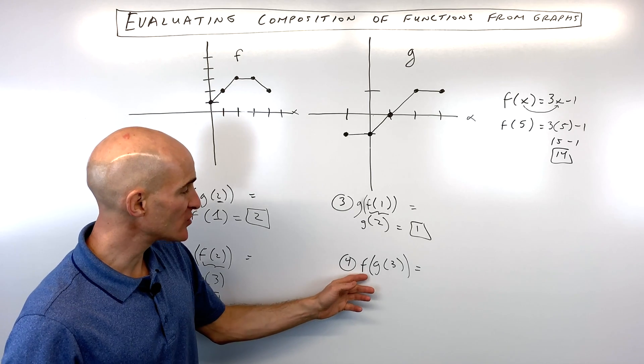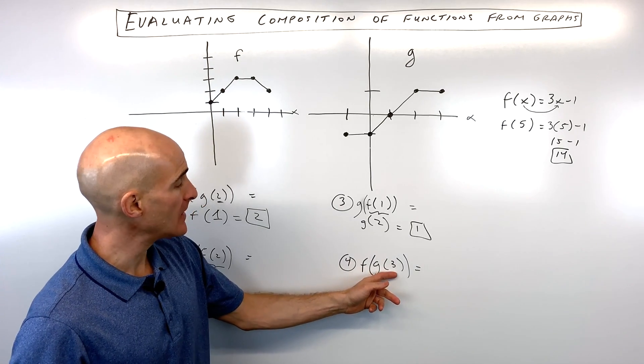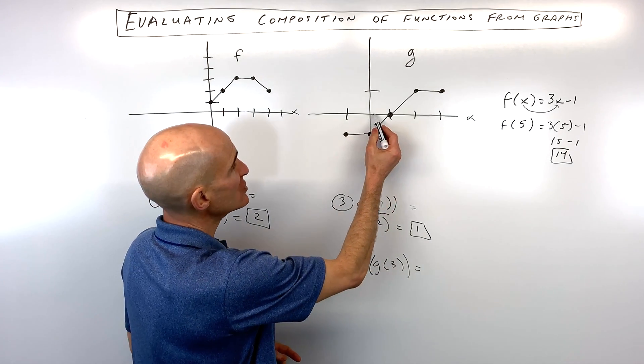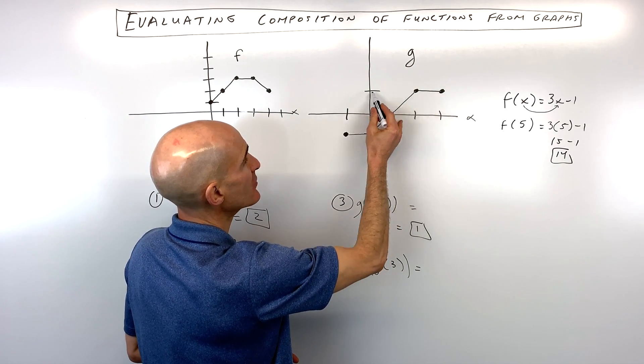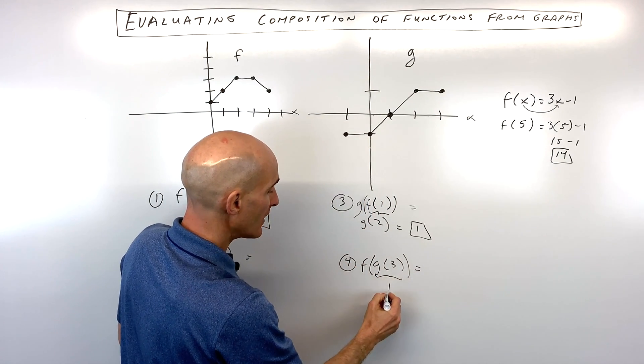Last example. See if you can do this one. f of g of 3. So here we're going to go over to the g function. 1, 2, 3. We go up to the graph. We can see that the y value is 1. So this is 1.